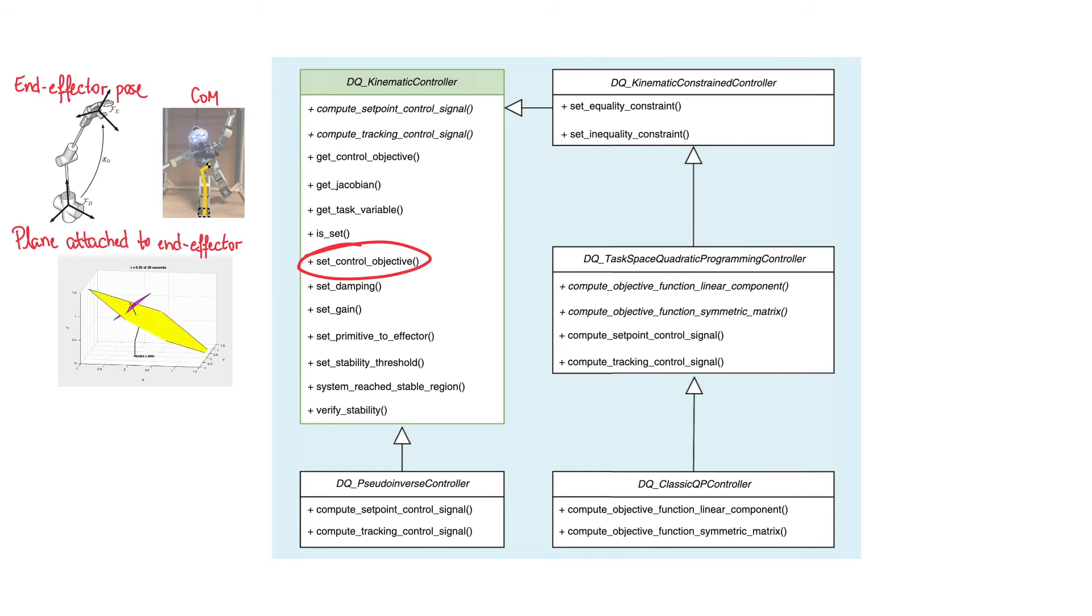For example, when using the Diki pseudo-inverse controller class, which implements the control law that we have just seen, if we decide to control the end-effector position instead of the end-effector pose, we use a single command to set the new control objective and the library automatically changes the task vector and its corresponding Jacobian matrix.